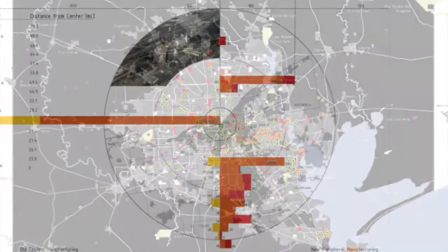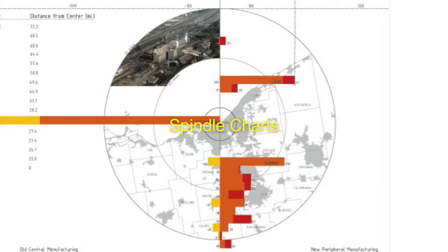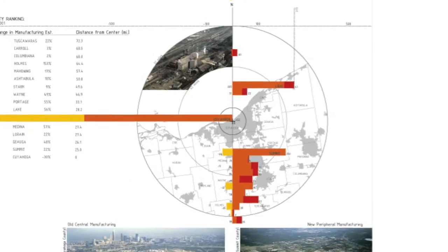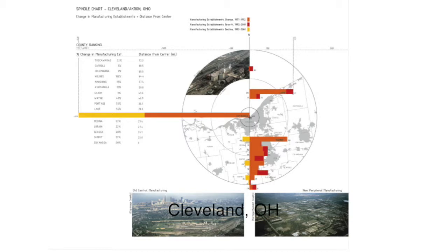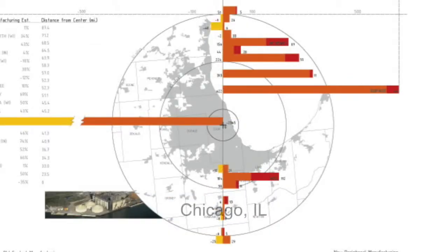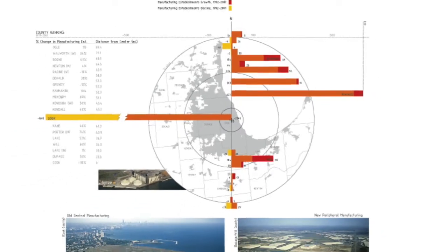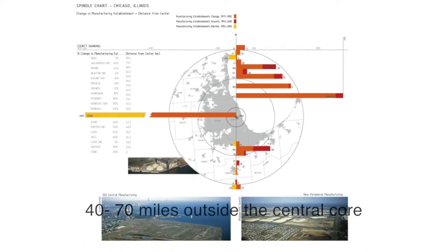The third set, called spindle charts, tracks manufacturing loss or gain over 30 years, mapped over distance from the central core. It reveals an astonishing amount of growth in manufacturing 40 to 70 miles outside the central core in suburban areas.